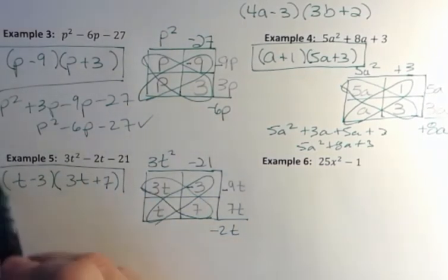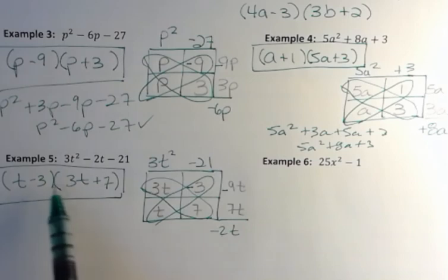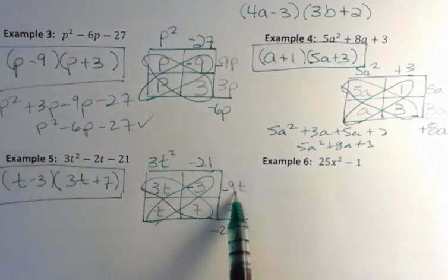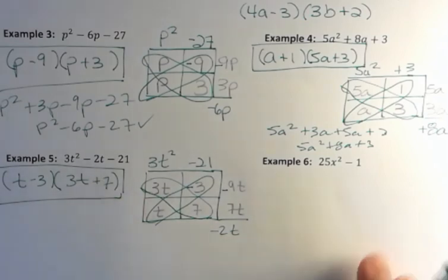Again, multiply that out and you'll see you get 3t squared. You get plus 7t minus 9t minus 21. And those t terms are going to give you that negative 2 in the middle.